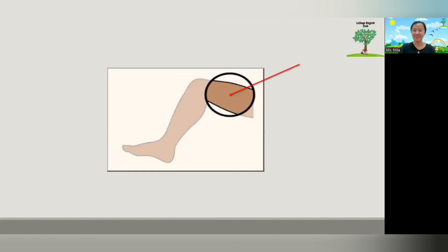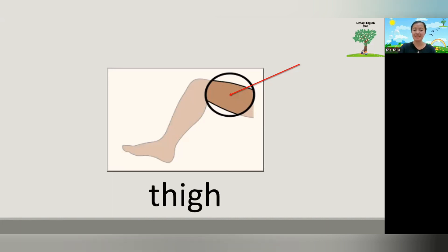And how about this one? What is this? Do you still remember what it is in English? Great, thigh. What is it? Thigh. Thigh means paha. In Indonesian, we call it paha. Very good.